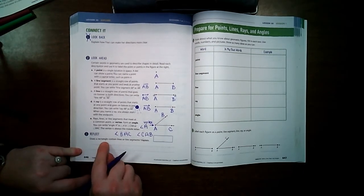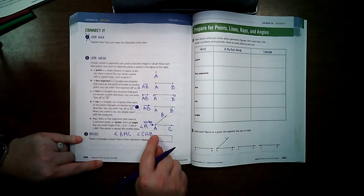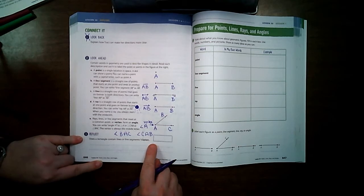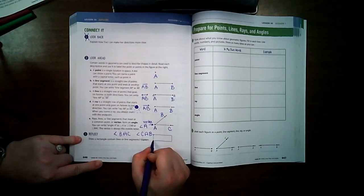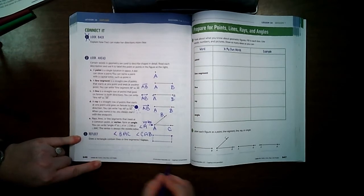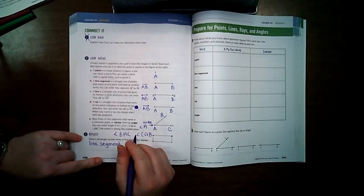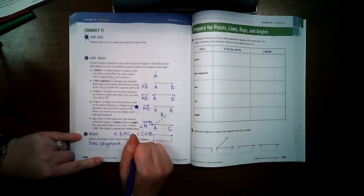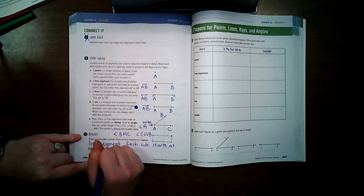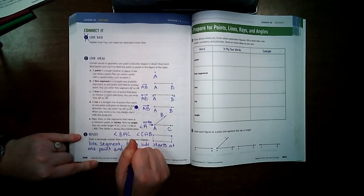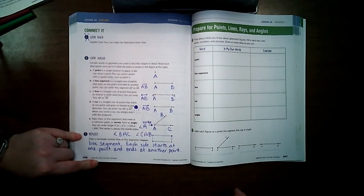Does a rectangle contain lines or line segments? Explain. Remember, a line has planes that go on forever. Are there arrows going off of this that go on forever? No, they stop just like our line segment does. It's almost like we have a vertex or a point on each one of these corners because they don't go forever. So a rectangle is like a line segment because each side starts at one point and ends at another point. They don't go on forever.